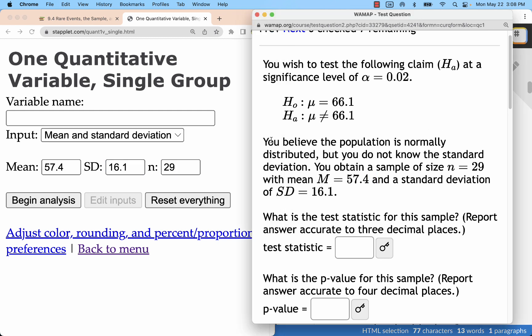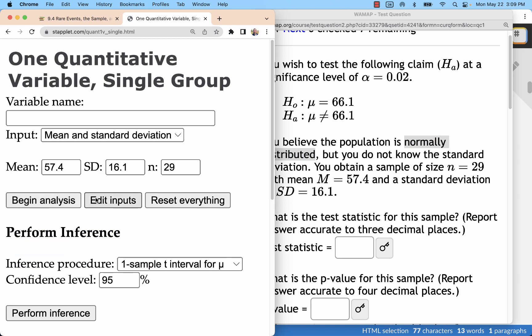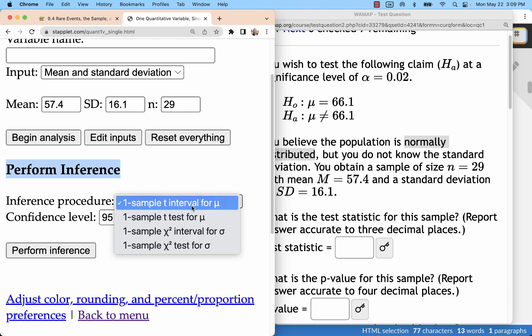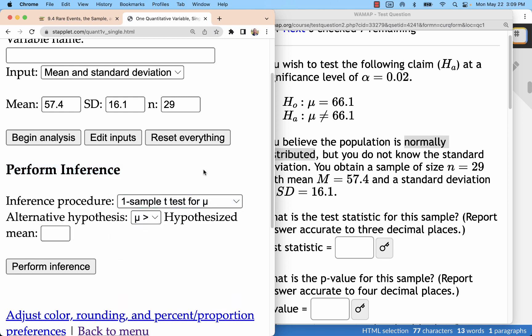Now, you'll see this other piece here. You believe the population is normally distributed. We would need that to be the case because it is a small sample. Once we're under 30, we want to make sure that it's going to be predictable by being normally distributed. In Staplet, begin analysis. We only have one option, and that is inference. In that, we could do a t-interval. That's like what we did to find a confidence interval. Or we're going to have a t-test. We won't use those other options. So for this chapter, we're looking at a t-test.